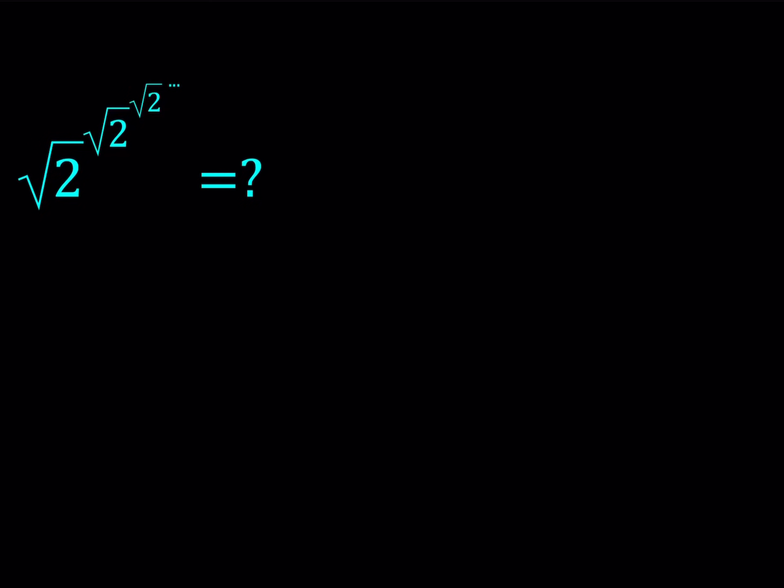We have the square root of 2 stacked up as exponents, and there are infinitely many square root of 2s. This needs to be well defined, and I'm going to give you a sequence definition for this one. When you have a problem like this — nested square roots that are infinitely many, added, multiplied, whatever — we pretty much have the same type of approach. We call this expression x, and then proceed with the solution.